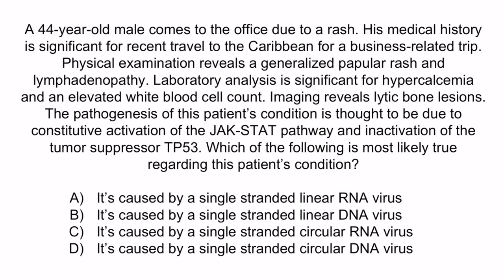Hopefully from the question stem you notice that this patient has adult T-cell leukemia lymphoma. We can deduce this based upon his recent travel to the Caribbean, a rash, hypercalcemia, lytic bone lesions, and abnormalities of signaling pathways classically associated with cancer, including the JAK-STAT pathway and TP53. So the correct answer is A — it's caused by a single-stranded linear RNA virus. B is incorrect because the only single-stranded DNA virus is parvovirus, which is typically associated with aplastic crises in sickle cell disease, not with adult T-cell leukemia lymphoma.